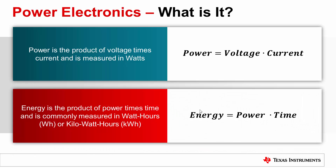So what exactly is power electronics? Electrical power is measured in watts and is calculated as the product of instantaneous current and instantaneous voltage. Energy, on the other hand, is the product of power over a period of time and is measured in watt hours. Every home is connected to the utility grid. Utility companies bill businesses, schools, and residences for electricity and charge by the kilowatt hour. Typical energy prices are in the range of 10 cents per kilowatt hour.